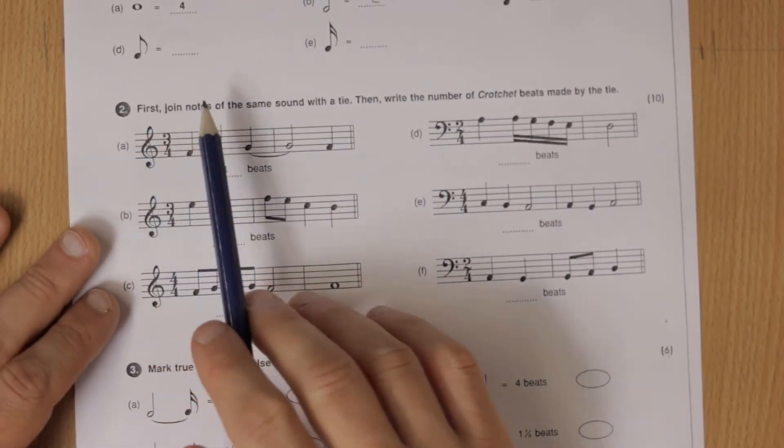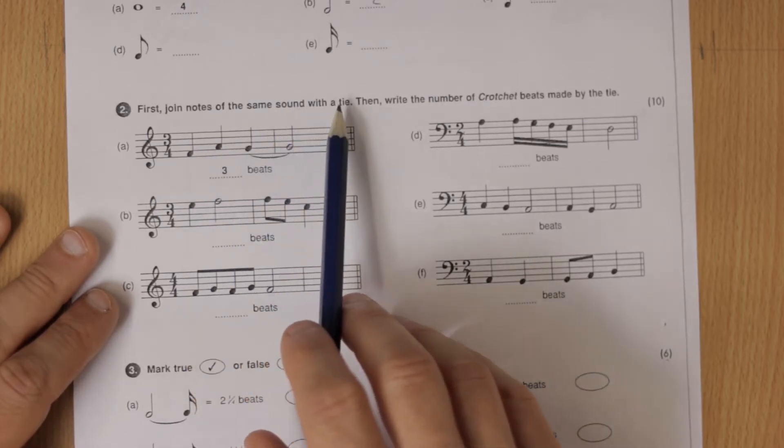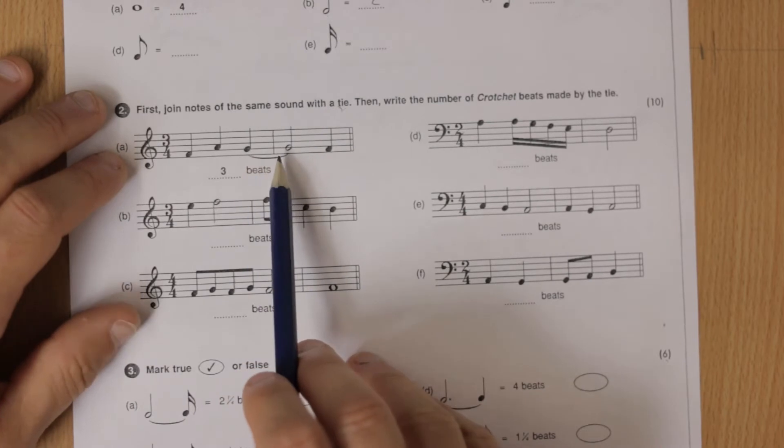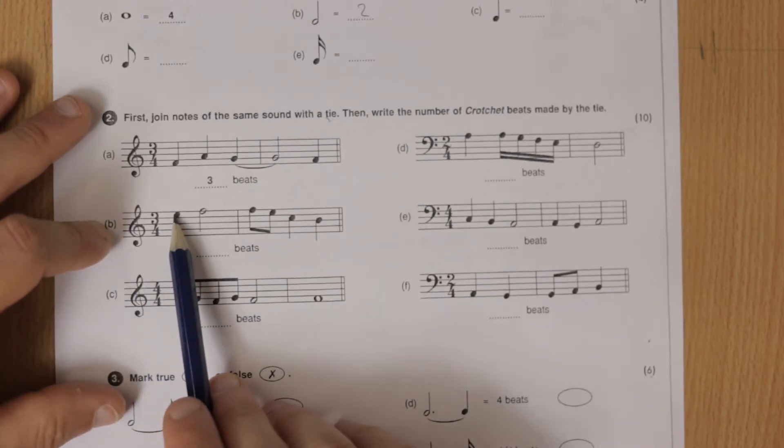Question two. First join notes of the same sound with a tie. So we'll do that first. They've done one here so for B, looking for notes of the same sound as in the same pitch.